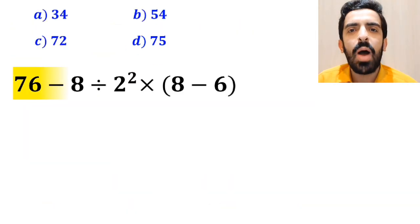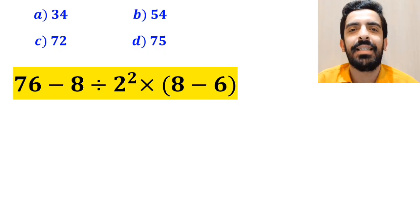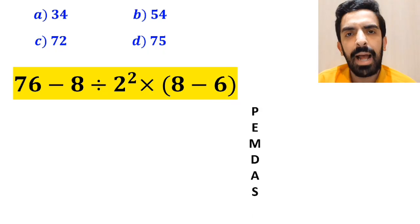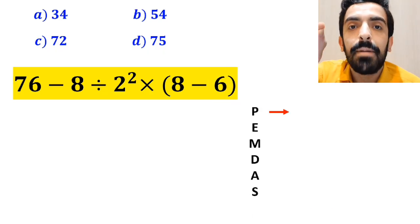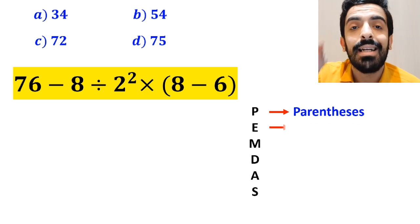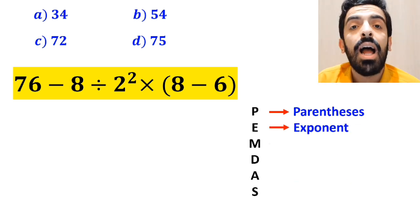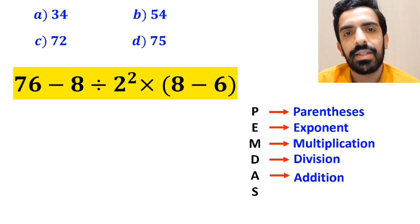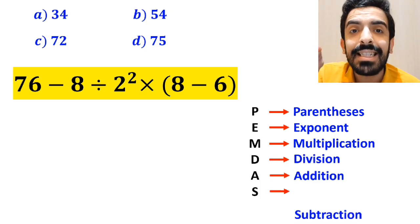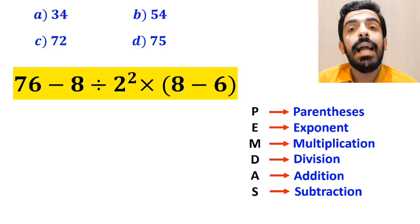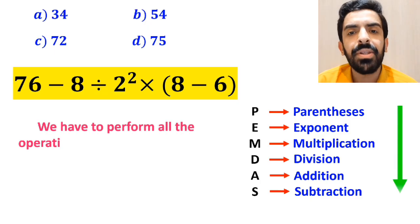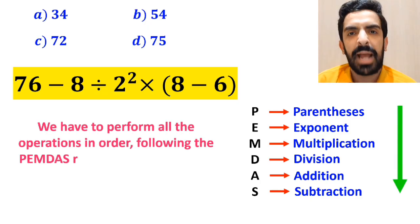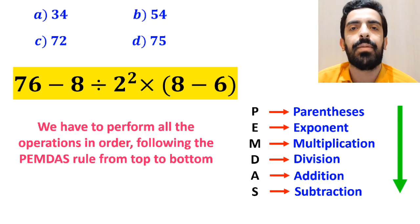Now let me show you how to solve this expression properly. To solve this problem, we must follow the PEMDAS rule. In this rule, P stands for parenthesis, E stands for exponent, M stands for multiplication, D stands for division, A stands for addition, and S stands for subtraction. It means we have to perform all operations in order following the PEMDAS rule from top to bottom.